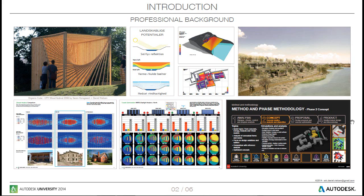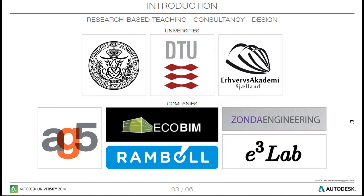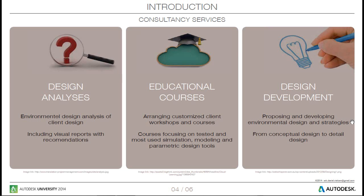A few words on my professional background: I am trained as an architect and originally also educated as a carpenter. Here are a few examples of the projects and services I provide. I am involved in research-based teaching at the Royal Danish Academy of Fine Art and DTU, the Technical Engineering University, as well as working with various companies. Besides teaching and design, I also provide consultancy, which consists of three parts: design analysis, educational courses, and design development. All these services are about creating better and sustainable design, which is what this lecture will be about.